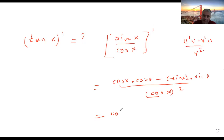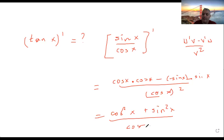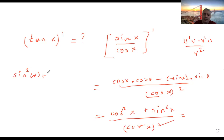This gives us cosine squared x plus sine squared x, divided by cosine squared x. Do you remember this trigonometric identity: sine squared x plus cosine squared x equals 1? This is a fundamental property in trigonometry.